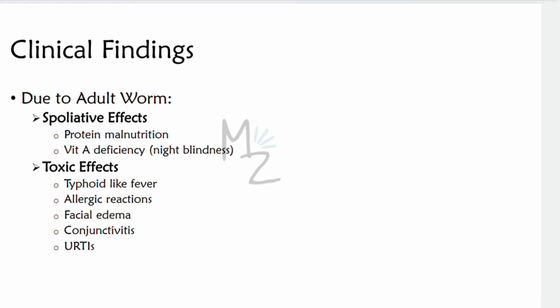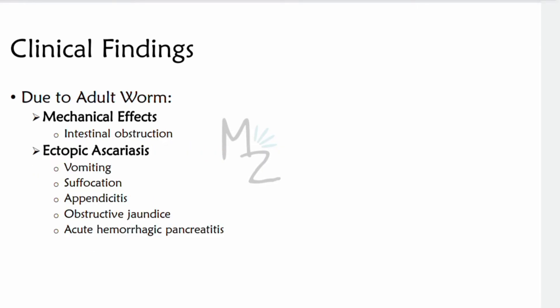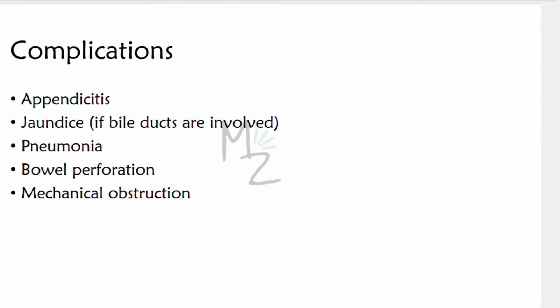Effects due to adult worms include spoliative effects such as protein malnutrition and vitamin A deficiency leading to night blindness. Toxic effects include typhoid-like fever, allergic reactions, facial edema, conjunctivitis, and upper respiratory tract infections. Mechanical effects include intestinal obstruction. Ectopic Ascaris can cause vomiting, suffocation, appendicitis, obstructive jaundice, and acute hemorrhagic pancreatitis. Complications include appendicitis, jaundice if bile ducts are involved, pneumonia, bowel perforation, and mechanical obstruction.